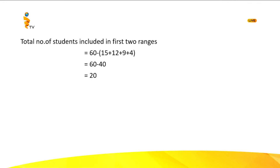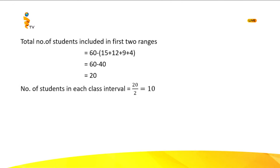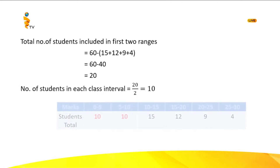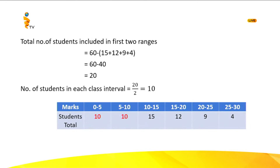These 20 students are included in the first two ranges. Since there are equal number of students in these two ranges, the number of students in each class interval will be 10. So when you complete the table, it will look like this.